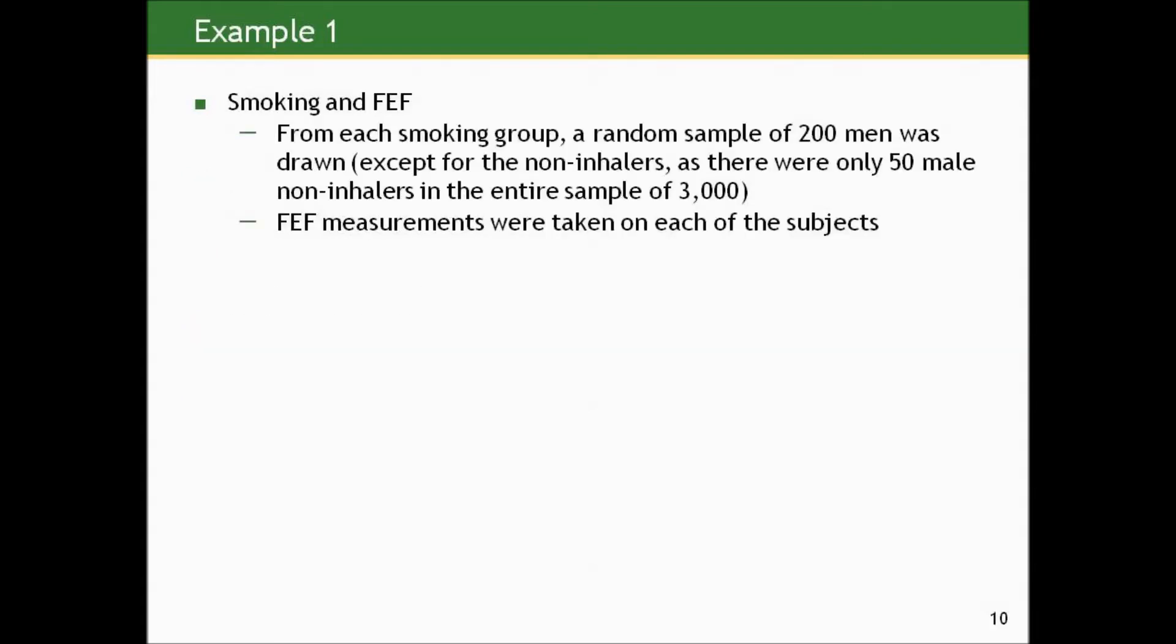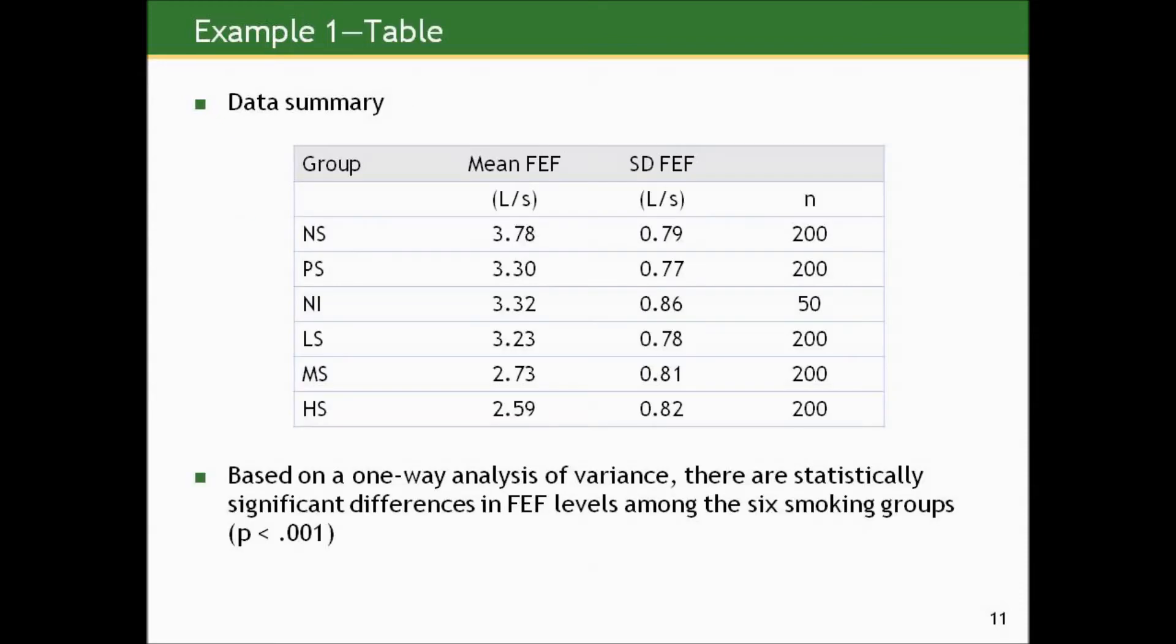It's the six classifications we enumerated before. For each smoking group, a random sample of 200 men was drawn, except for the non-inhalers as there were only 50 non-inhalers in the entire sample. And then they took the forced mid-expiratory flow measurements. The FEF measurements were taken on each of these subjects.